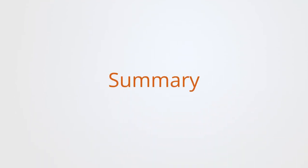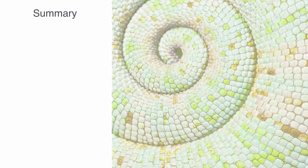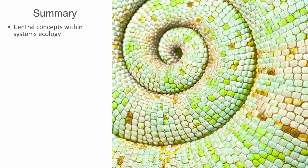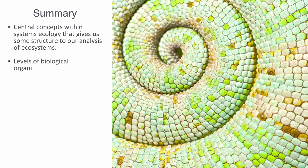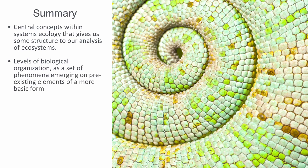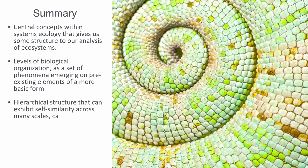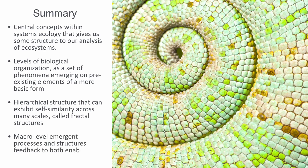In this video we've been talking about emergence and integrative levels — central concepts within systems ecology that give structure to our analysis of ecosystems. We discussed integrative levels or levels of biological organization as a set of phenomena emerging on pre-existing elements of a more basic form, and how through this process of emergence we get many integrative levels creating a hierarchical structure that can exhibit self-similarity across many scales, called fractal structures, with small local phenomena nested within larger more generic structures. Finally, we discussed the complex micro-to-macro dynamic within the hierarchy of ecologies, where macro-level emergent processes and structures feed back to both enable and constrain the micro-level constituent components.